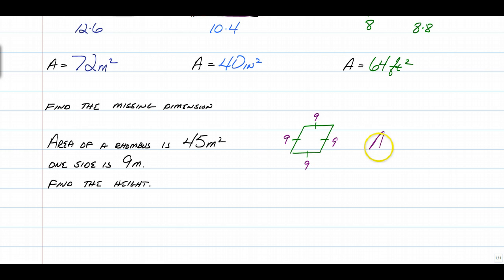So just use your formula. Area is equal to base times height. Plug in what you know. The area was given to you is 45 equal to one side, or the base, is 9 times h. Just divide both sides by 9, and you get a height of 5 meters. And that's it. Quick, easy video on how to find the area of parallelograms. This is Longo, and I'm out. See you, bye.